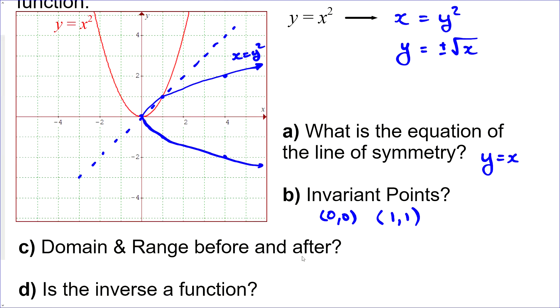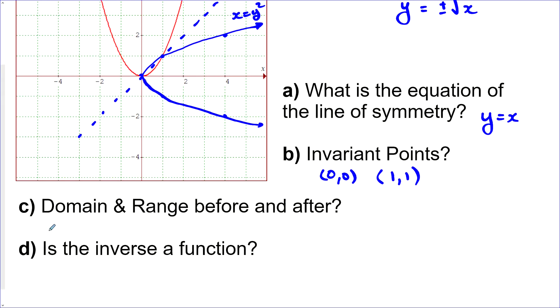Domain and range before and after. So let's say before we'll do in red here. Okay, so domain was all real numbers. So round brackets, because we cannot include infinity, we can't actually ever have that. Range would be greater than or equal to zero.